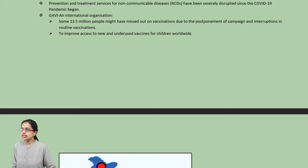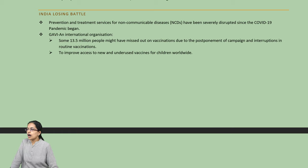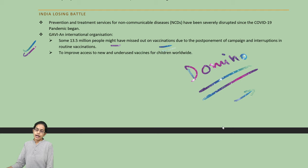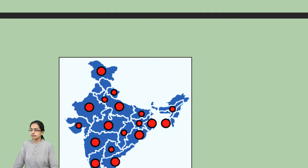GAVI, an international organization, has talked about millions of people who have missed their vaccination schedules due to either postponement of campaigns or interruption because of the lockdown phase — not only in India but across the globe. This might lead to a domino effect where trying to follow up on one creates a cumulative effect for others, and there could be a series of new diseases emerging because of missed vaccinations.